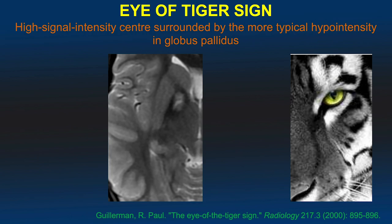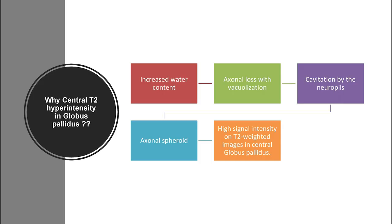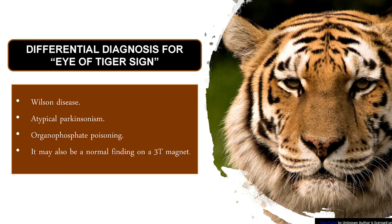The left eye of the tiger can be compared with the right side and vice versa in the brain. The central T2 hyperintensity is mainly due to increased water content resulting in axonal loss, which leads to cavitation by neutrophils and axonal spheroid formation, producing high signal on T2-weighted images.